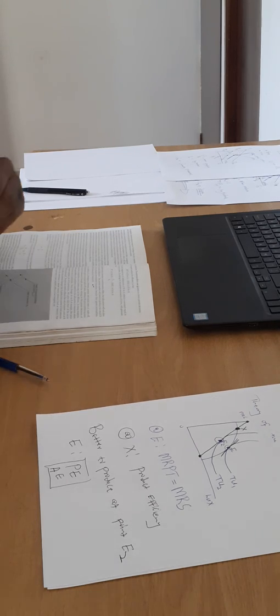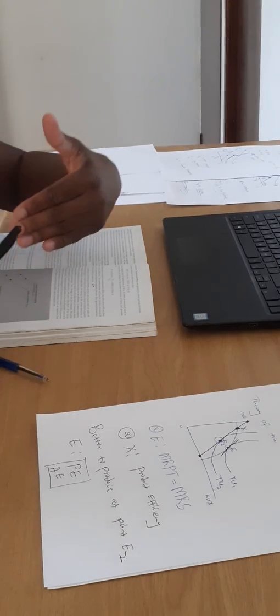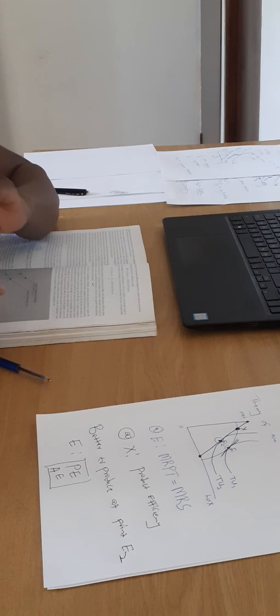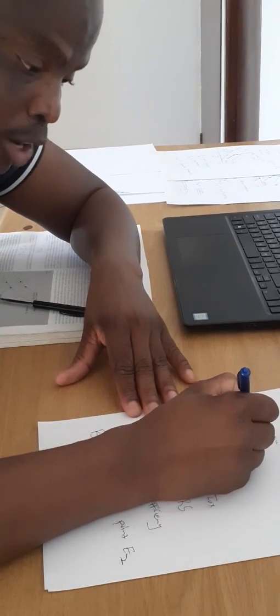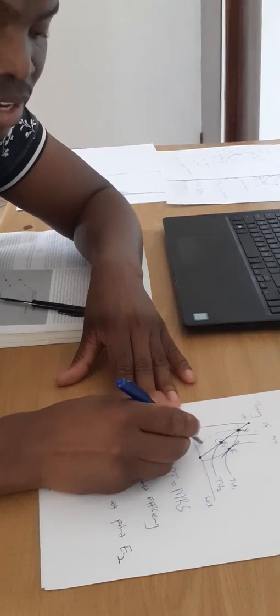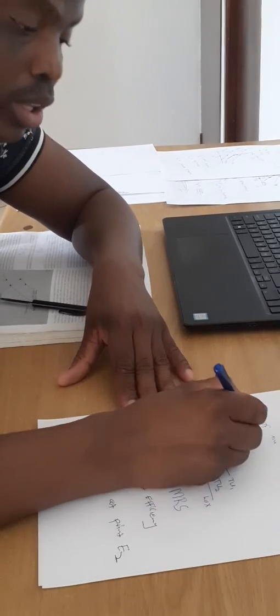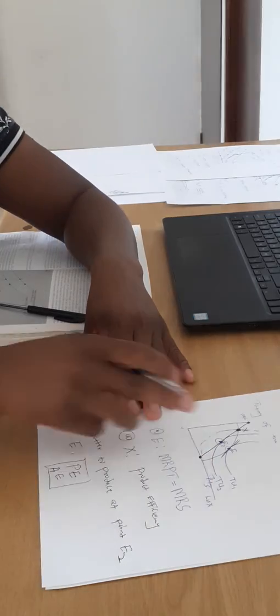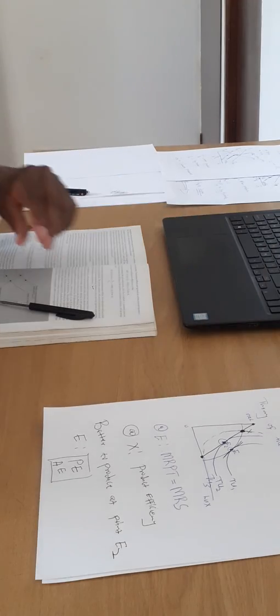Because we don't have enough money, we cannot produce at X just because it's on the budget line - it gives less satisfaction. If you draw the utility curve through X, you will see that it is a lower total utility curve, essentially below indifference curve two.